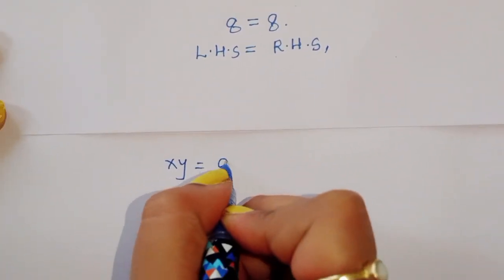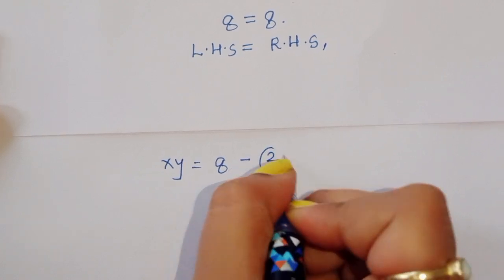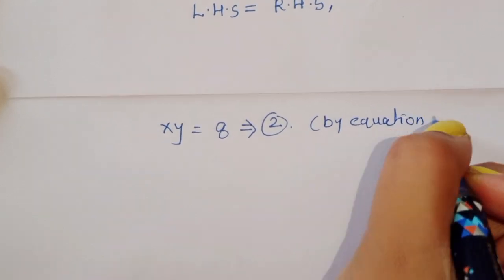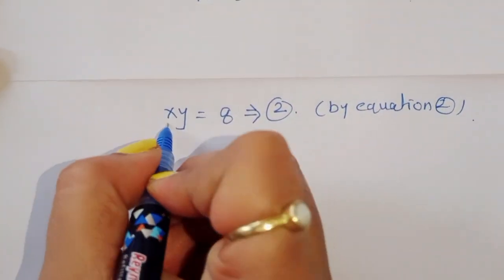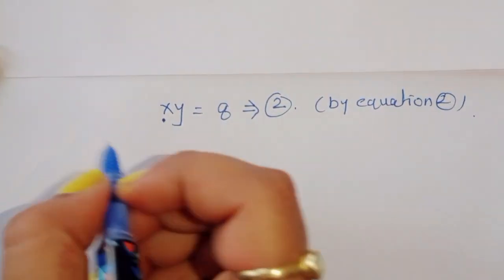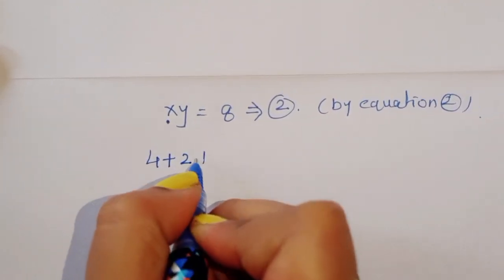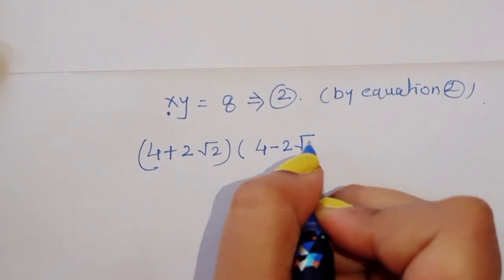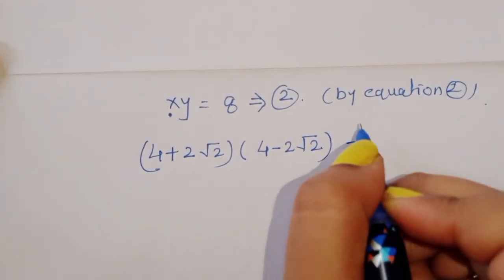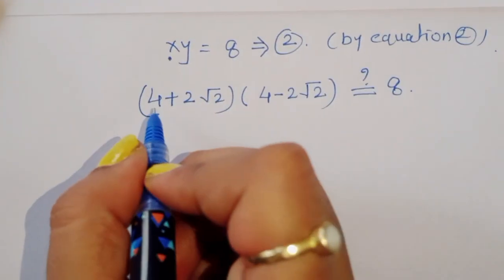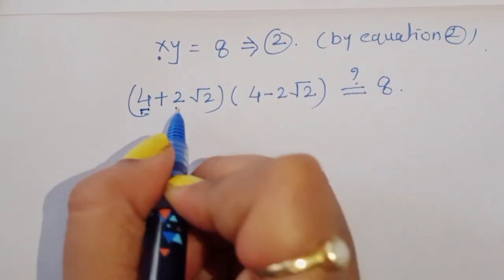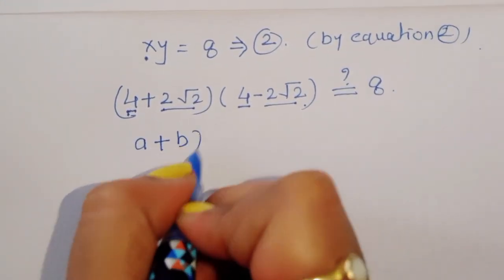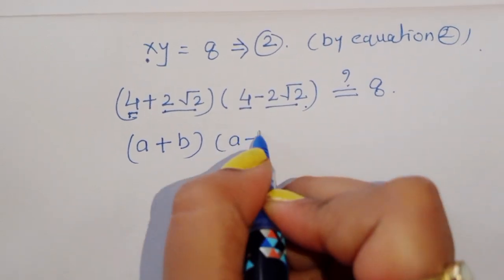Verifying by equation 2: x times y, which is (4 plus 2 root 2) times (4 minus 2 root 2). This is in the form of (a plus b)(a minus b), where a is 4 and b is 2 root 2.